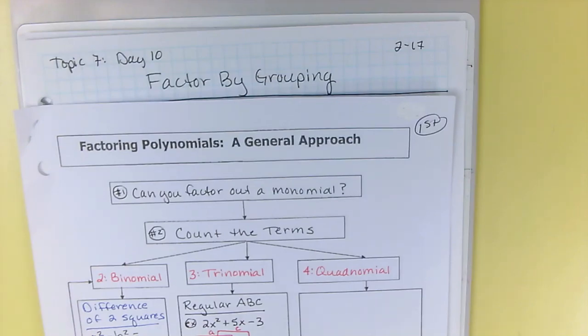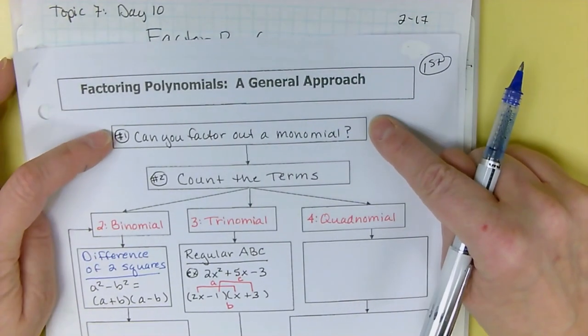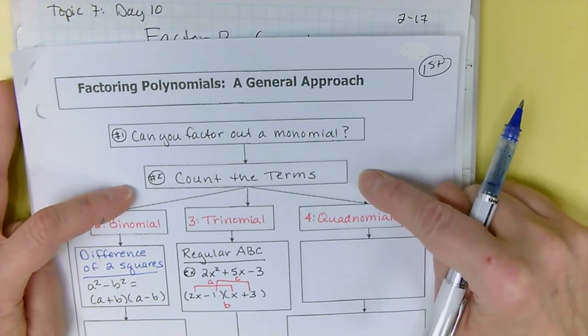Okay, so factor by grouping. In the general approach to factoring, you always see what you can divide out, and then you count the terms.